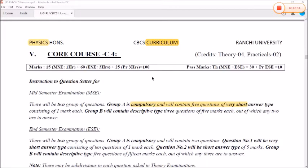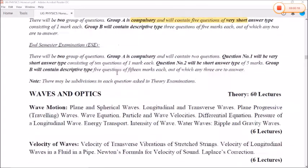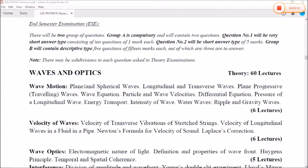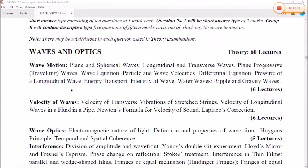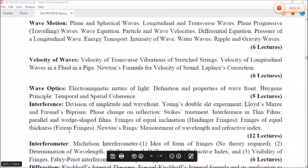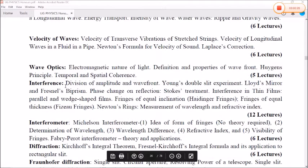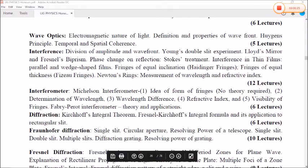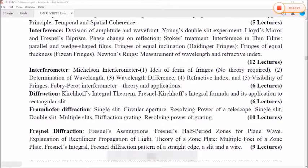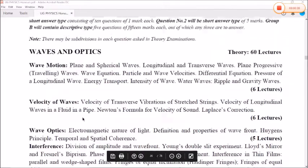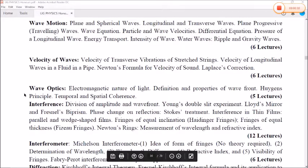The second semester syllabus of Ranchi University course C4 contains wave and optics, in which we have to study wave motion, velocity of wave, wave optics, interference, interferometer, diffraction and the types of diffraction, Fraunhofer diffraction and Fresnel diffraction. To start with, we will study wave optics, in which we are going to study about the definition and the properties of wavefront.